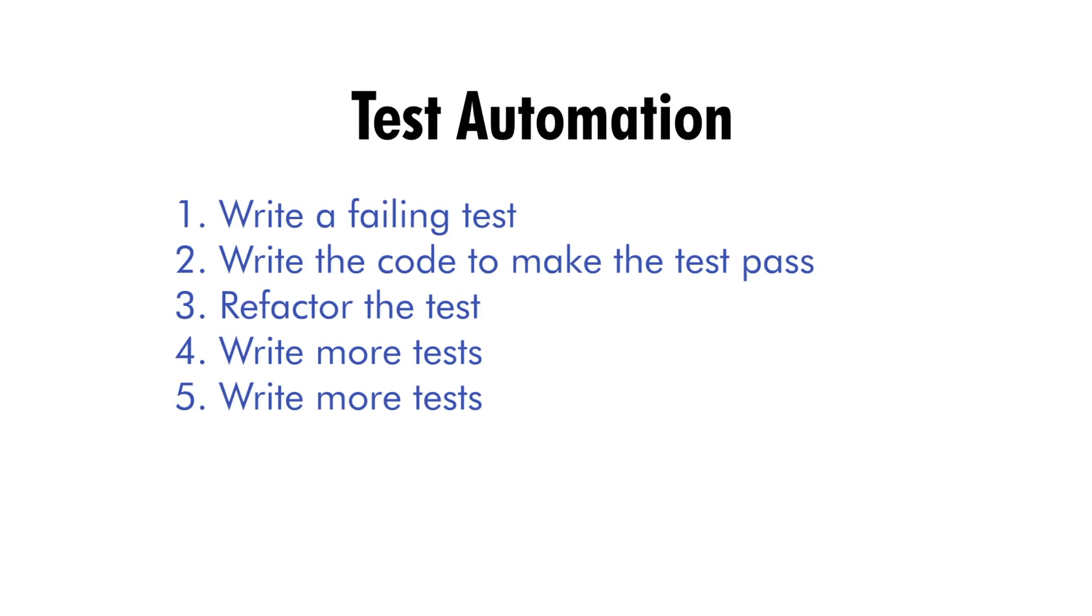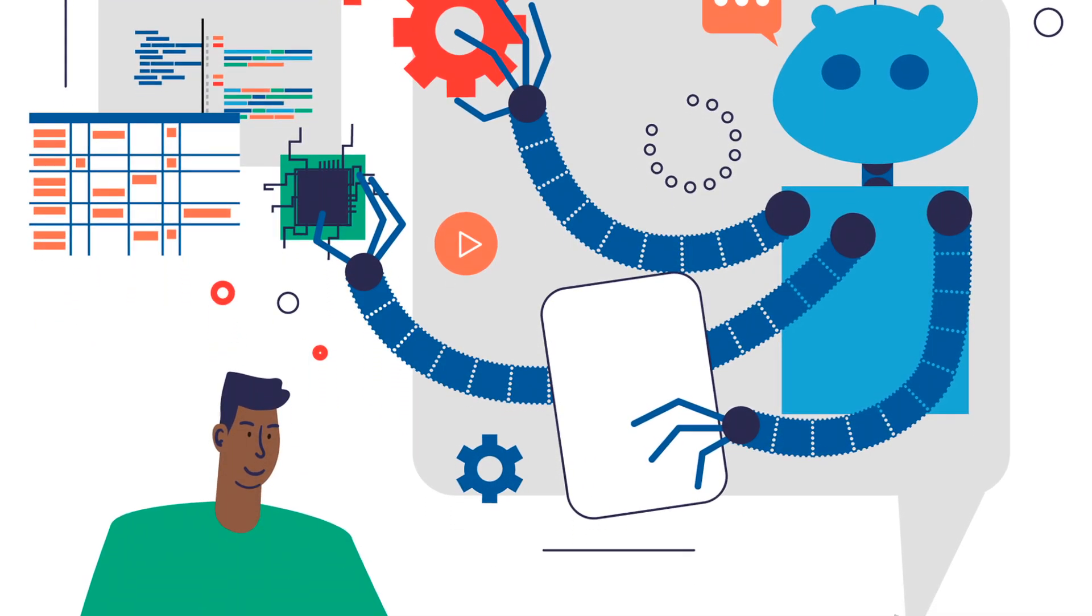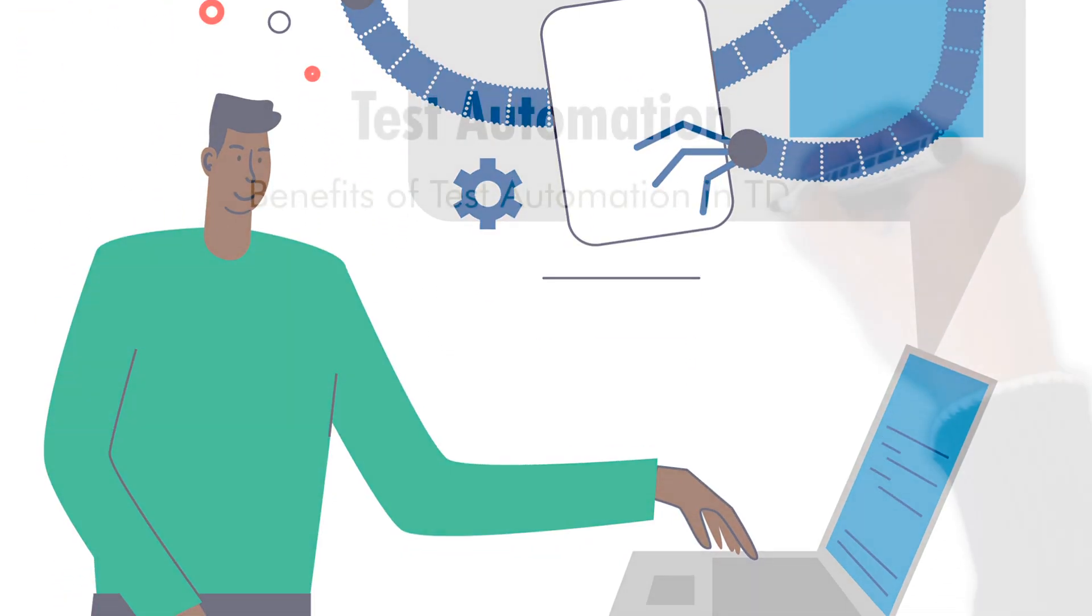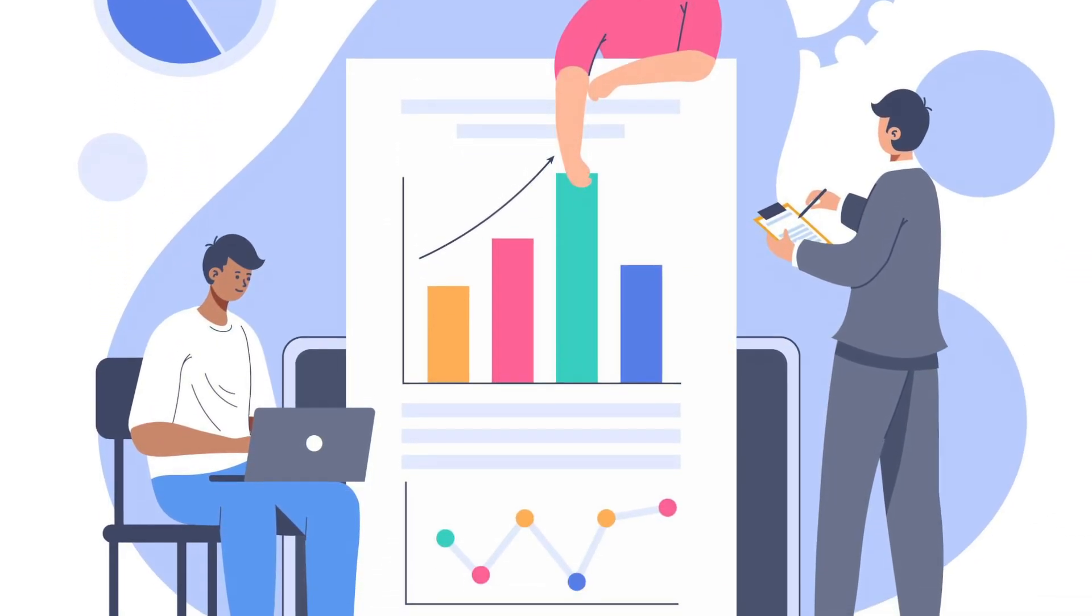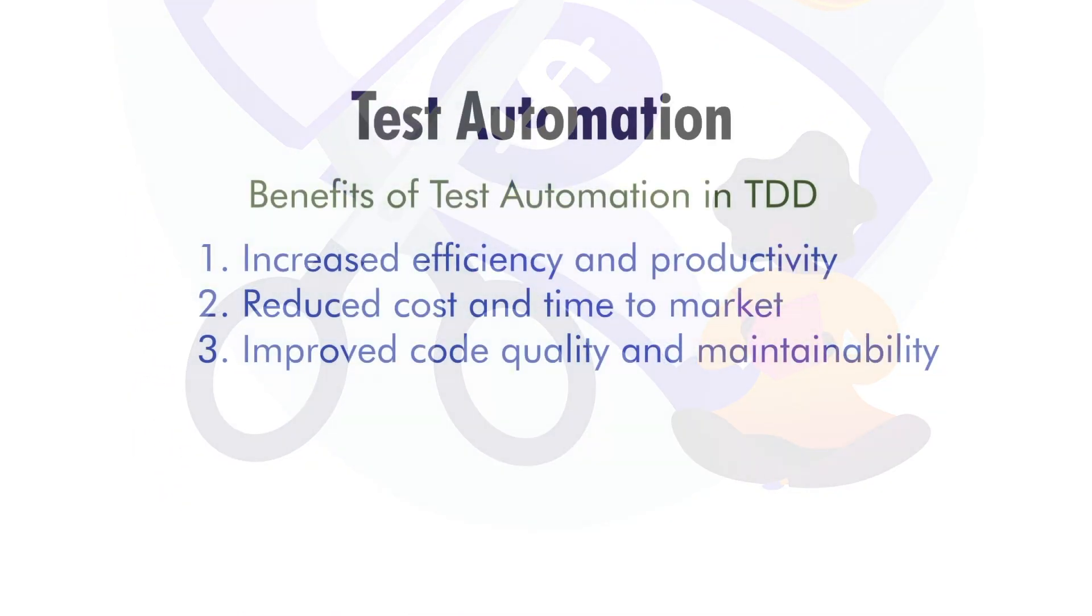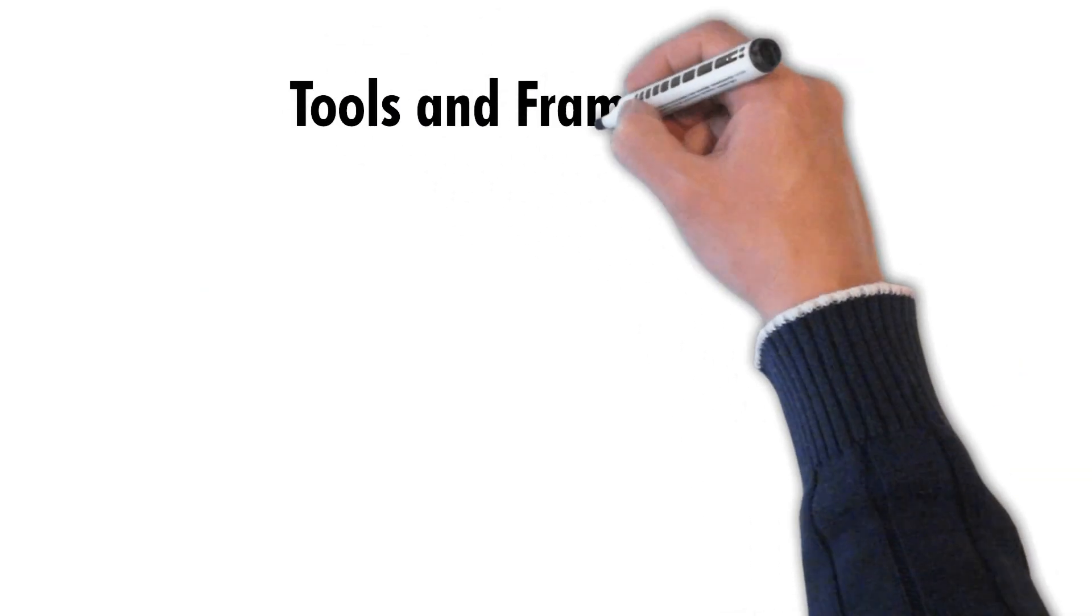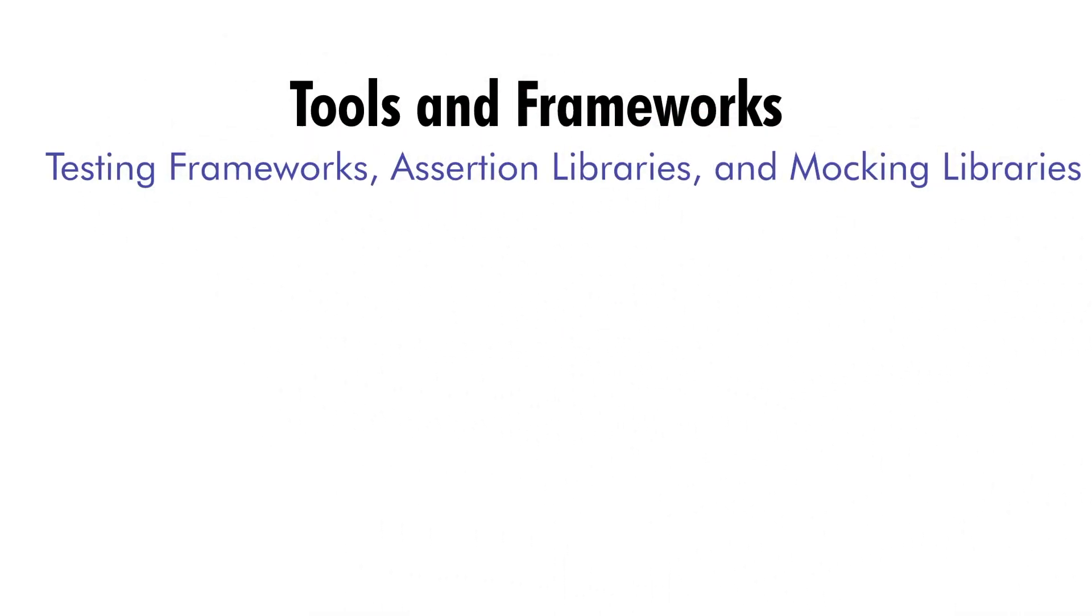Benefits of TDD in test automation: Test automation is an important part of TDD. By automating the testing process, you can increase efficiency and productivity, reduce cost and time to market, and improve code quality and maintainability. Automated tests can be run quickly and easily, allowing you to catch bugs and errors early in the development process.